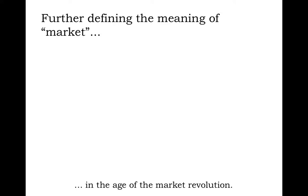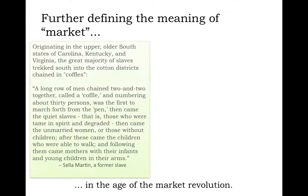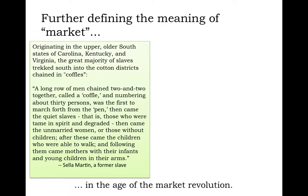This gives a very different meaning to the idea of a market revolution, because the enslaved peoples themselves became commodities in that marketplace. Originating in the upper, older South states of Carolina, Kentucky, and Virginia, the great majority of slaves during the antebellum period trekked south into the cotton districts, chained in what were called coffles. This was part of the American landscape for decades — an internal migration of enslaved men and women from the upper South to the newer lower South regions following the growth of the cotton kingdom. A domestic slave trade, the buying and selling of human beings, became an integral part of the market revolution.